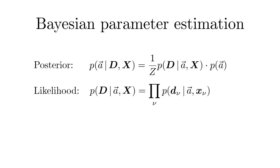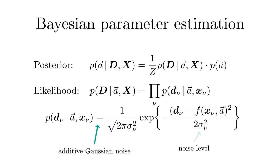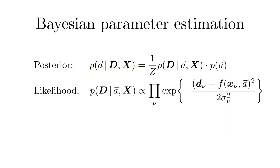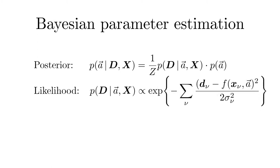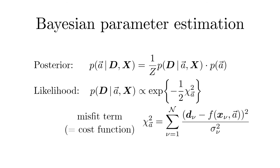In the case of additive Gaussian noise with noise level sigma nu, we can express the likelihood of one data point given by the model function f and the parameters a. Since we are interested in the probability density of the parameters a, we only need the terms that depend on them. We can replace the product of the exponential by the exponential of the sum.